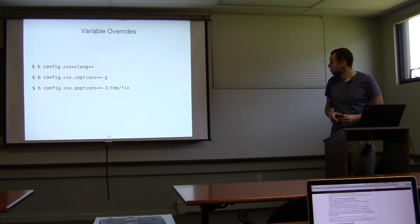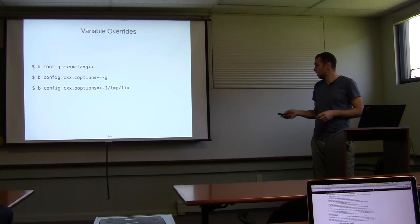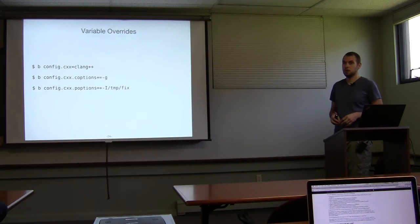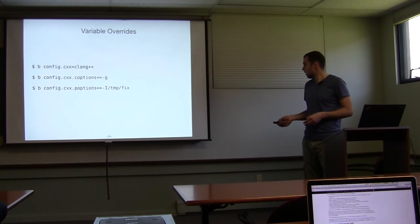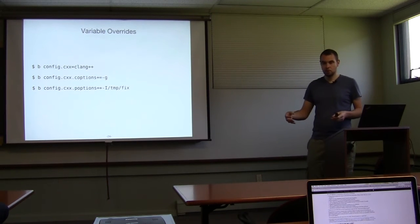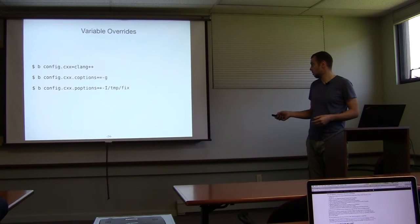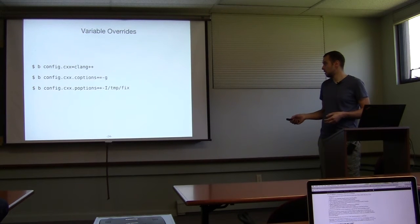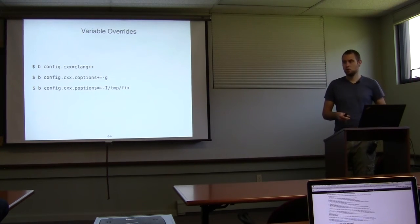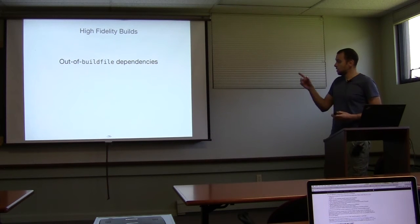Another feature: ability to override variables on the command line. You can do an outright override — quickly build with Clang instead of GCC in a particular configuration. We also added ability to add a suffix or prefix to values in the build file: for example, adding a debug option to quickly rebuild in debug mode, or prepending to the include search path so it's searched first.